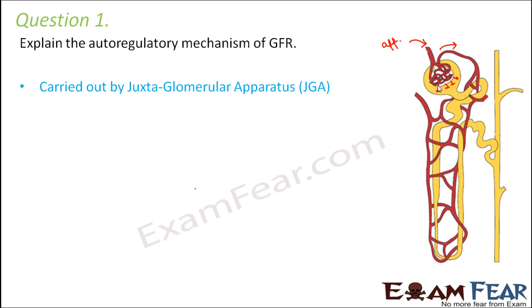This auto-regulatory mechanism is carried out by the juxtaglomerular apparatus, also commonly known as JGA. This is basically an arrangement formed by cellular modifications in the distal convoluted tubule and the afferent arteriole — somewhere around the region where the afferent arteriole meets the distal convoluted tubule.